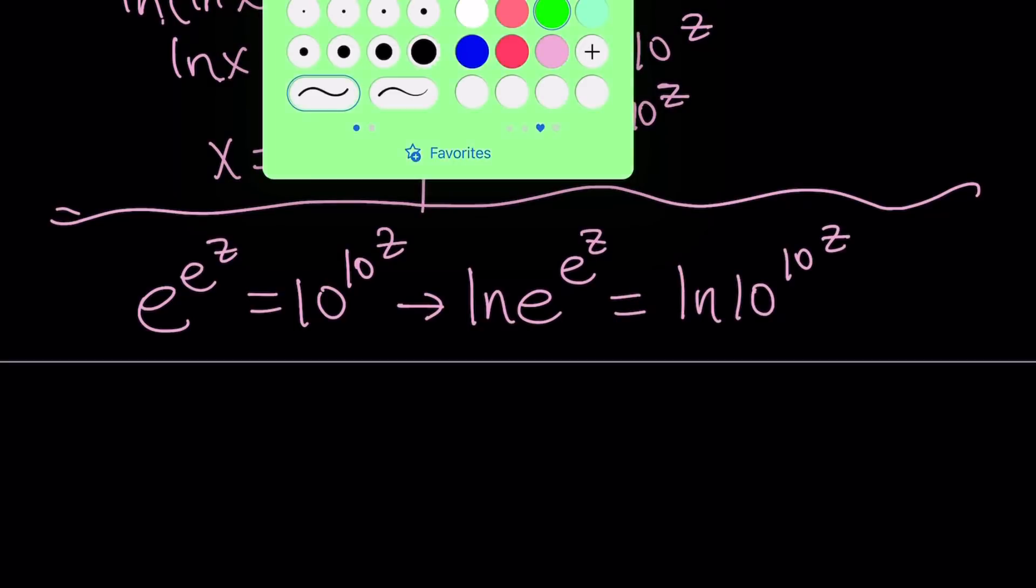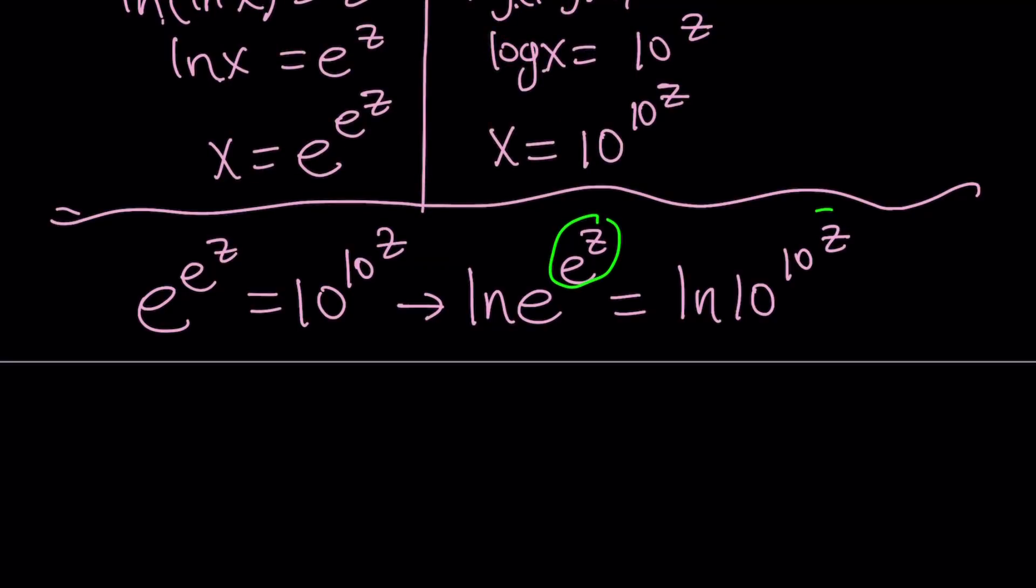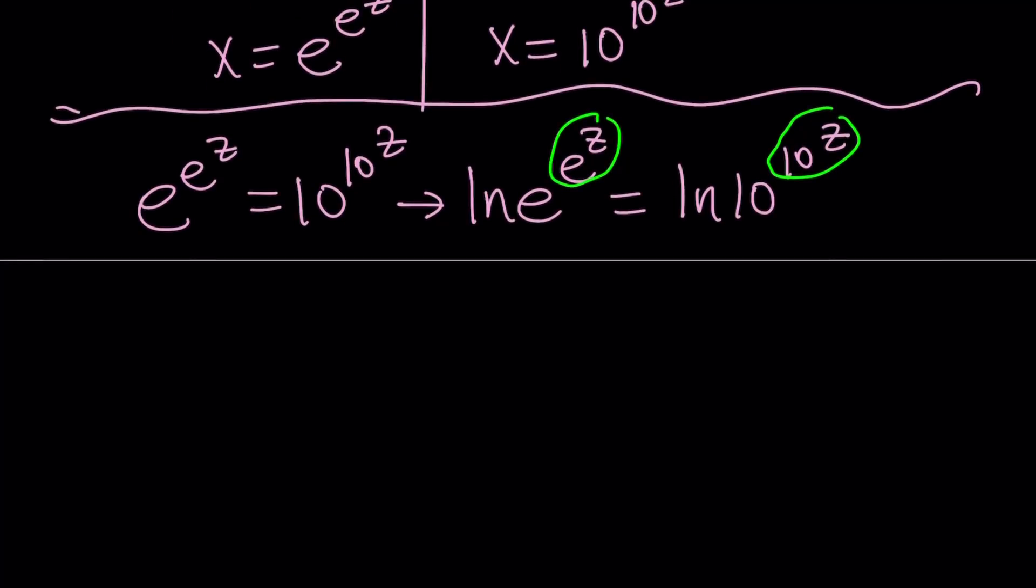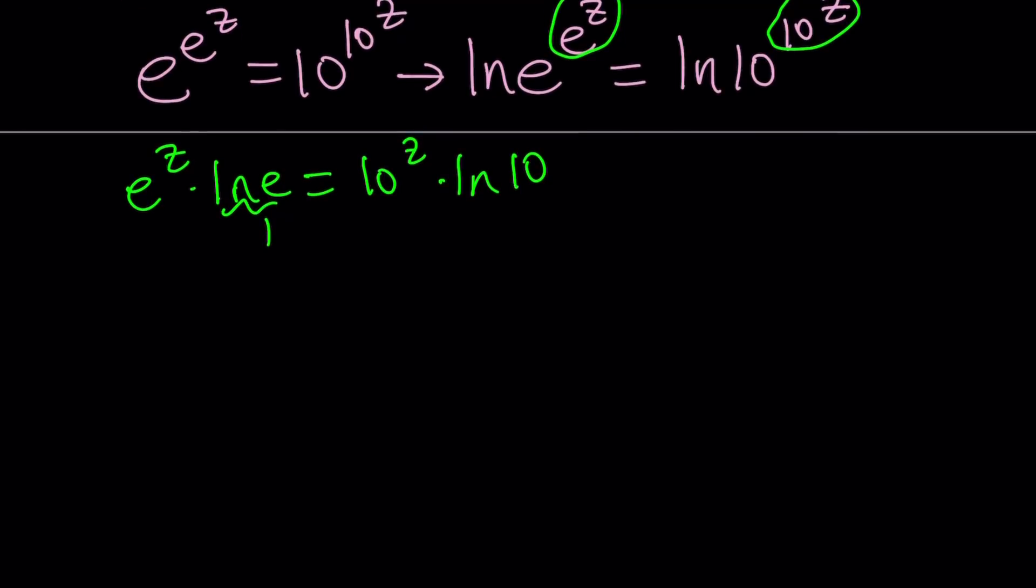Now notice that here I can go ahead and bring these down because those are exponents. And by using the power rule, bring the e to the power z to the front, multiply that by ln e, and bring this 10 to the power z and multiply by ln 10. But ln e is equal to 1. Come on, you don't even need to write it. But I did. So now go ahead and bring these together. Since they have the same exponent, I can kind of represent them like this. e divided by 10 to the power z. And that just equals ln 10.